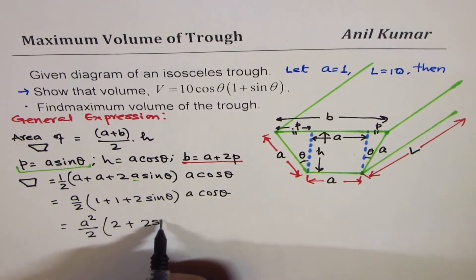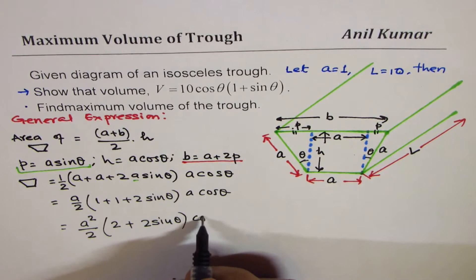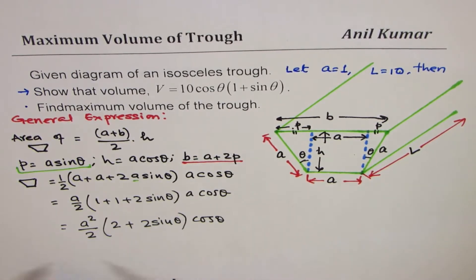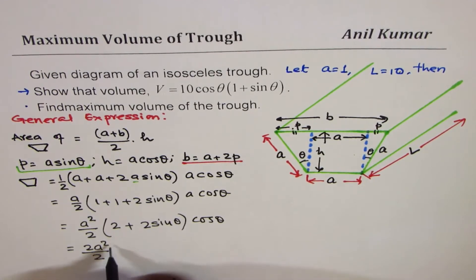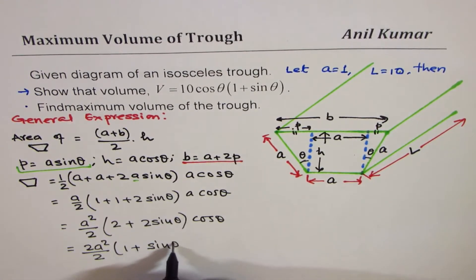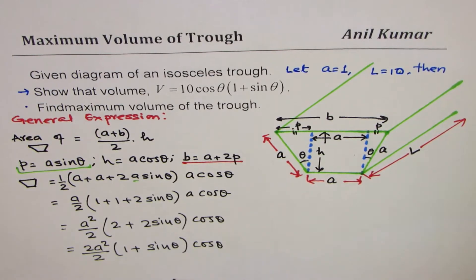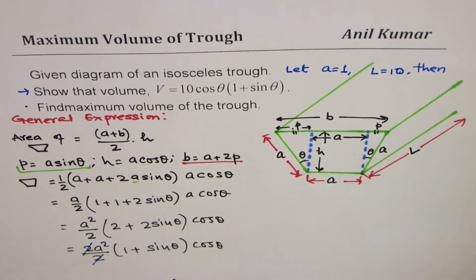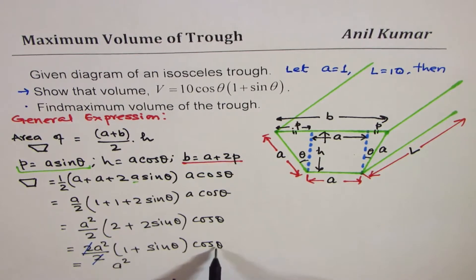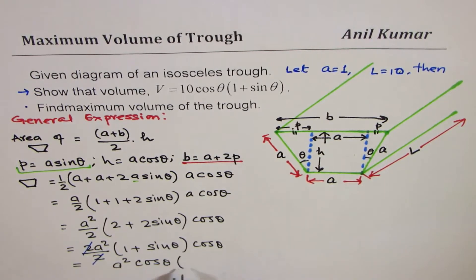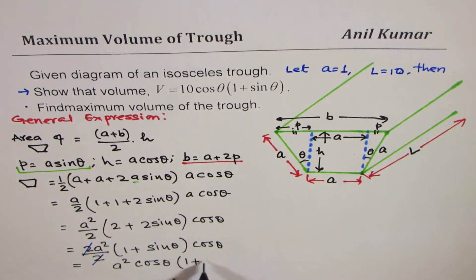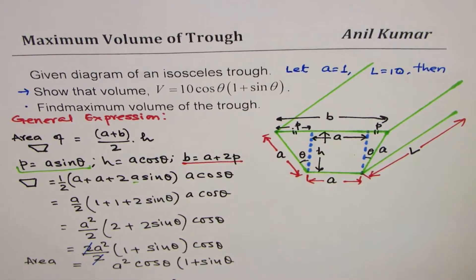So the area of the cross section is a squared cos theta times (1 plus sin theta). That's our expression for the trapezoidal cross-sectional area.